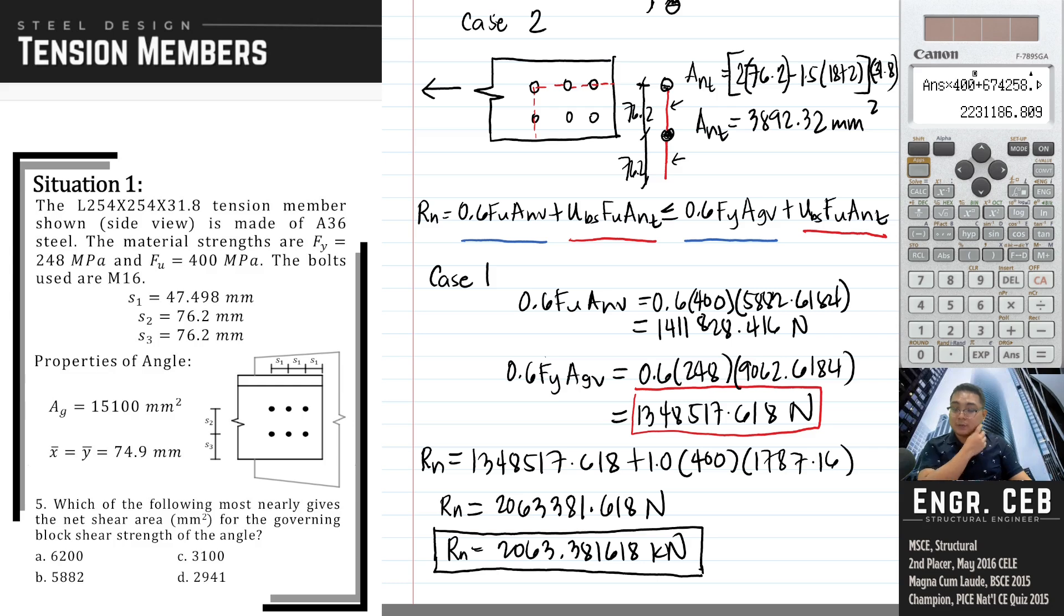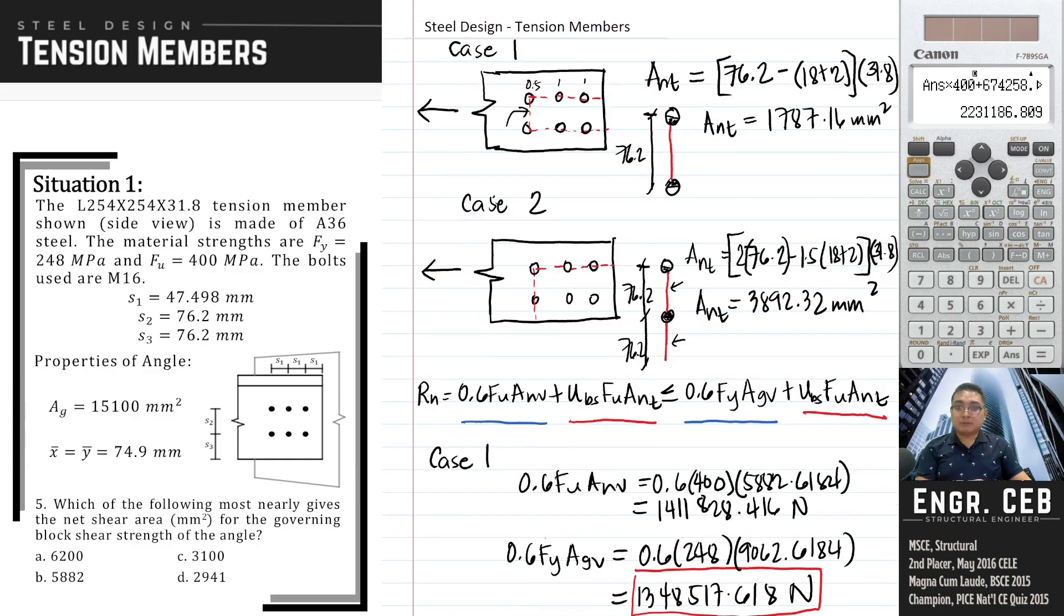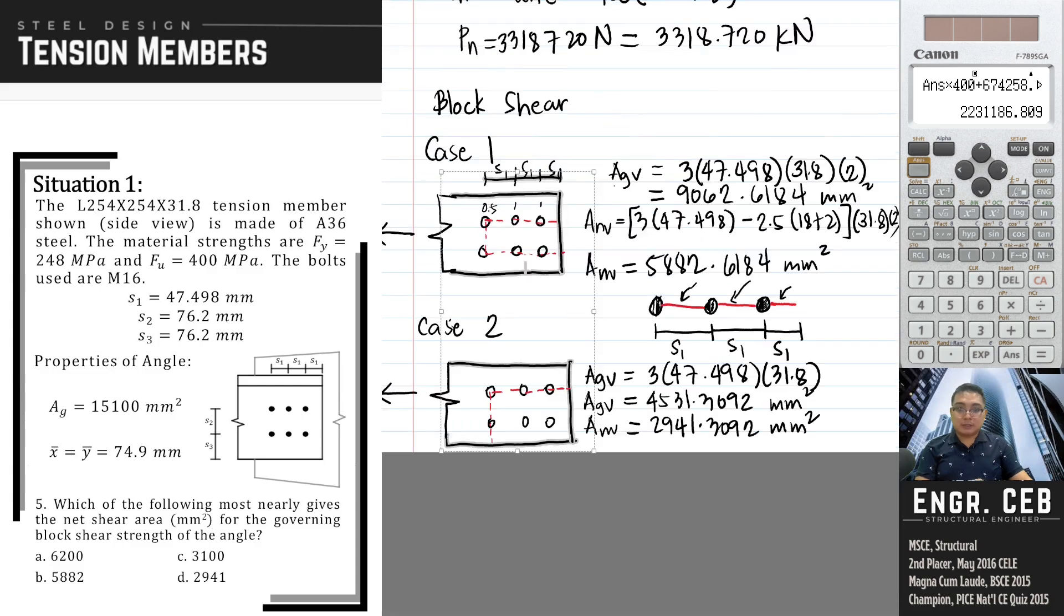We have to complete the solution up to the nominal strength. In this case, our case 1 is the governing block shear strength. Therefore, the answer for number 5 is the net shear area corresponding to case 1, which is 5882.6184. That is letter B.